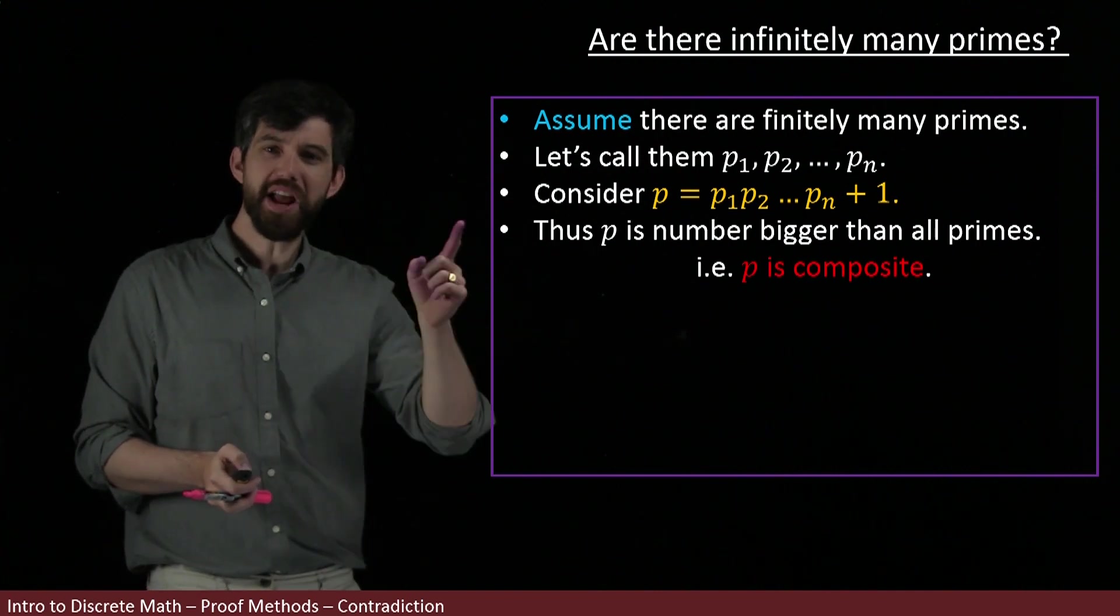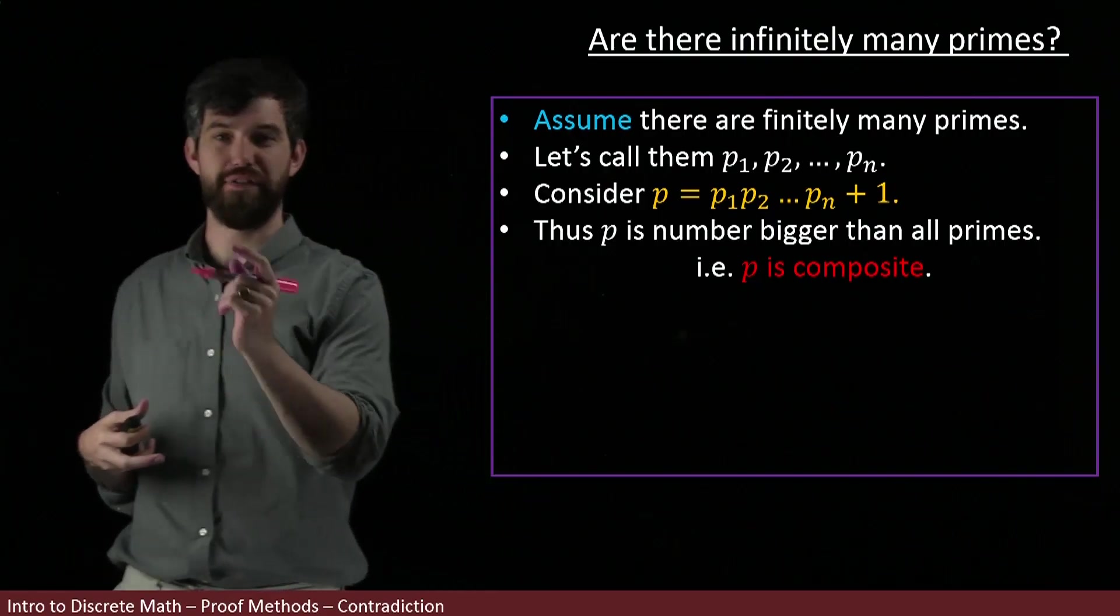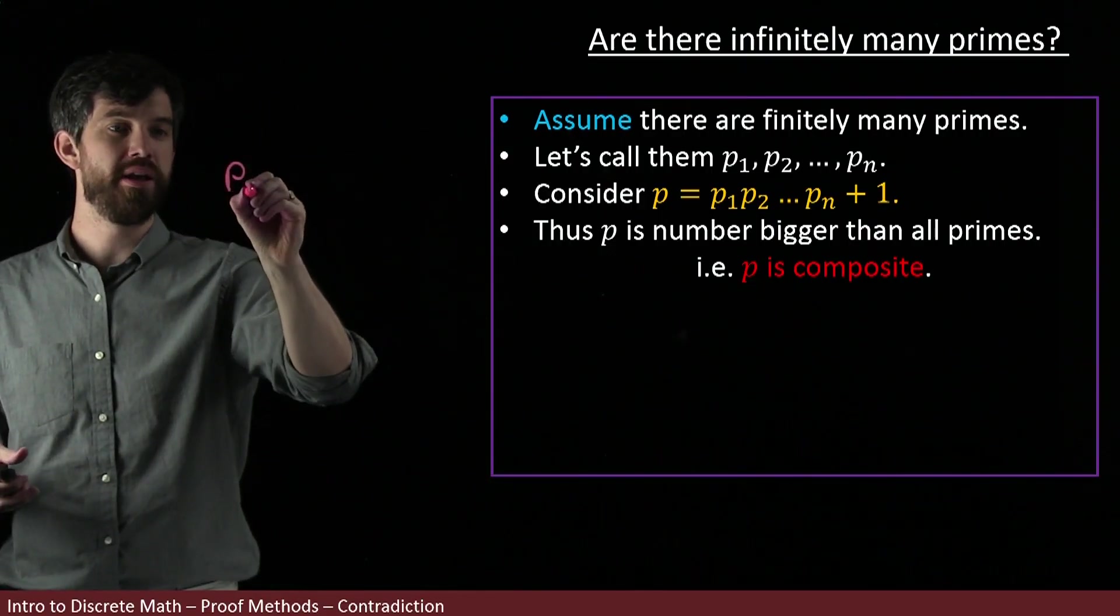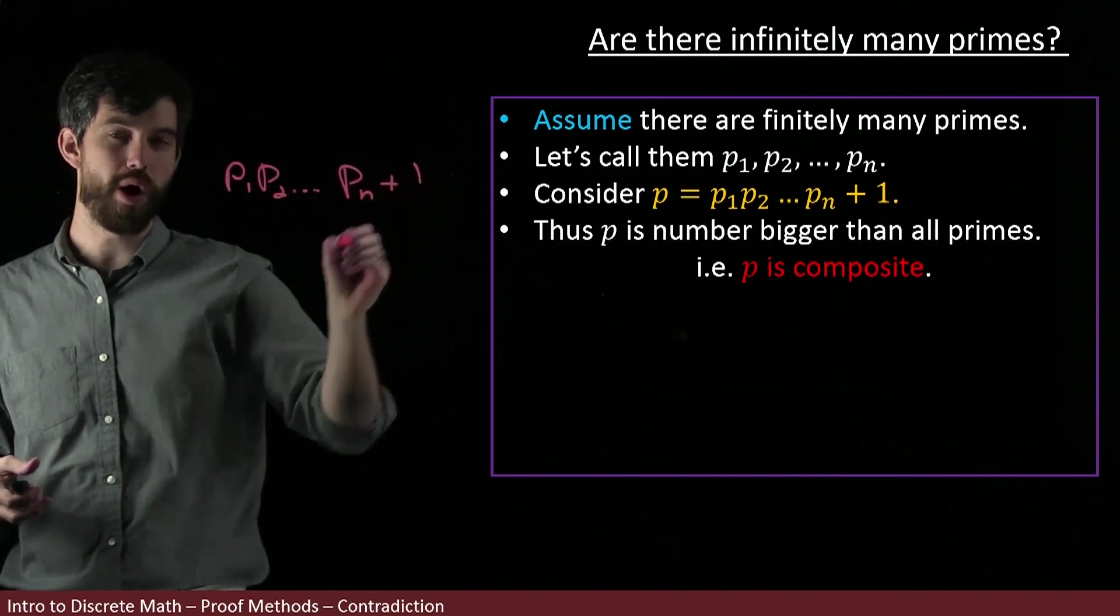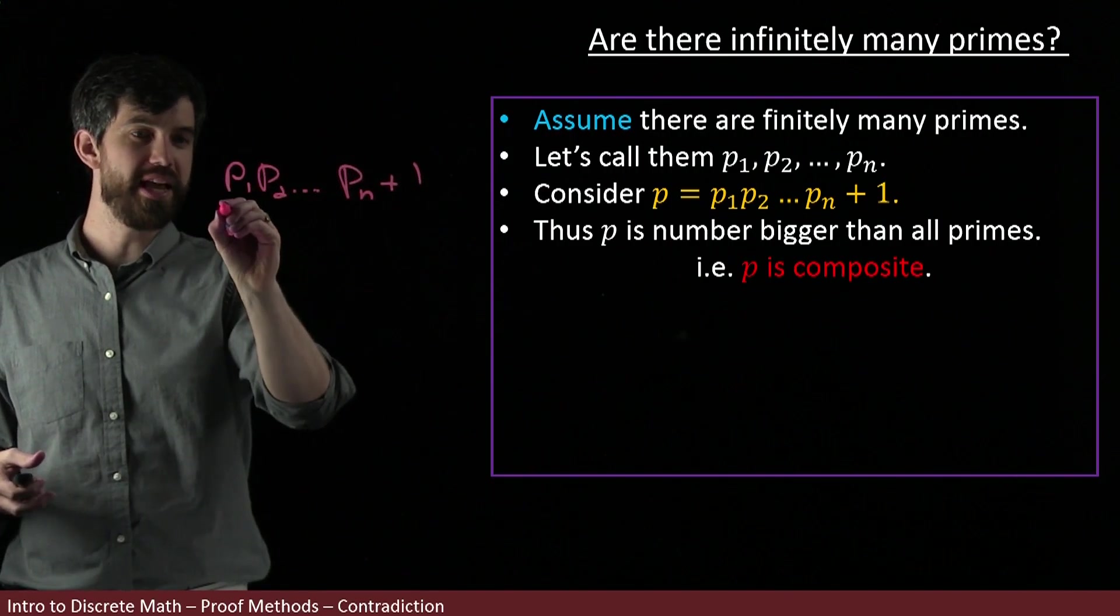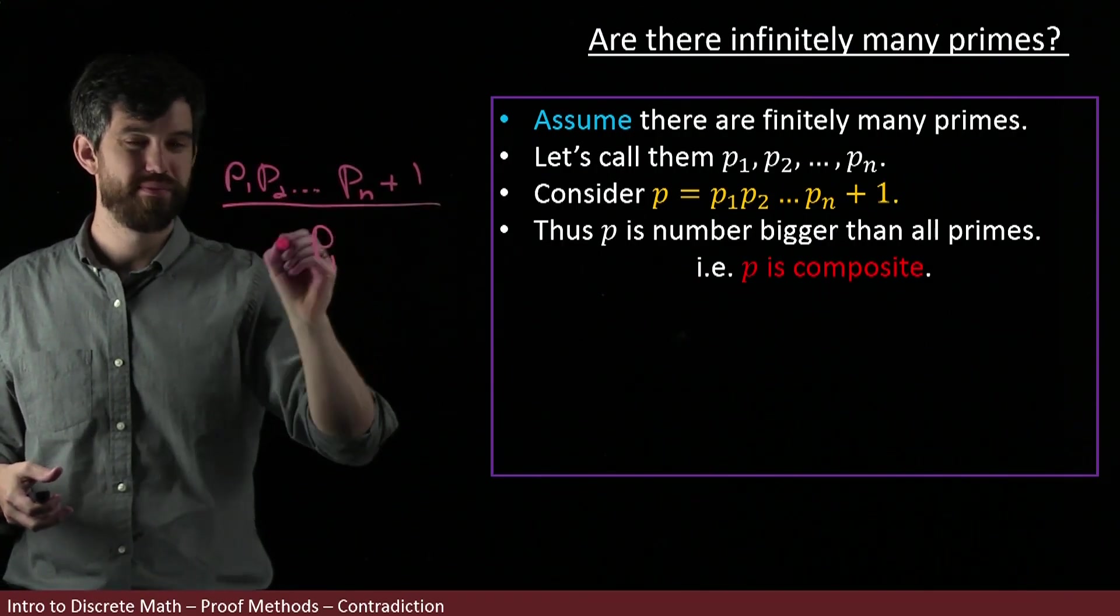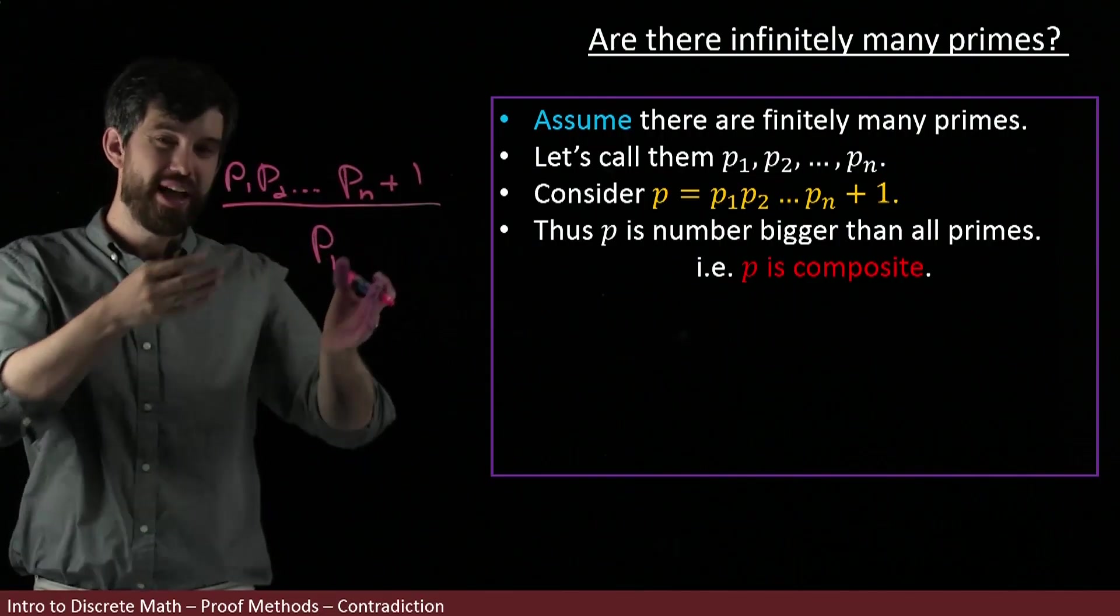How about I try dividing p by p₁? I'm going to take p₁ × p₂ × ... × pₙ + 1 and divide the entire thing by p₁. I could have divided by p₂ or p₃ or pₙ, but I just chose p₁.